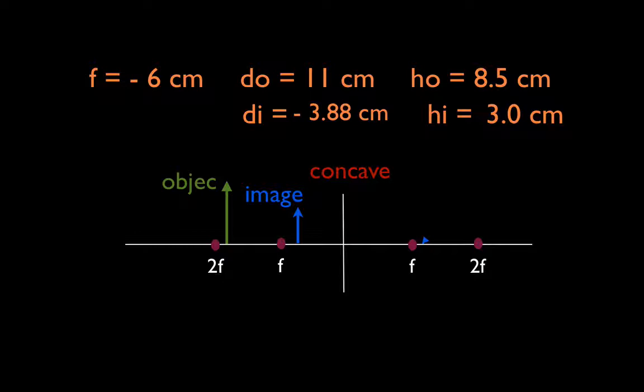Let's look at our diagram and see if our answers match. Image distance is negative 3.88 — that fits because we said it has to be less than 6, and it is. We also said the image has to be smaller: the image is 3 centimeters, the object height is 8.5. We said it has to have the same orientation — the image height is positive, confirming same orientation. We get a virtual image. Everything fits, and we know we probably did the correct work and got the correct answers.